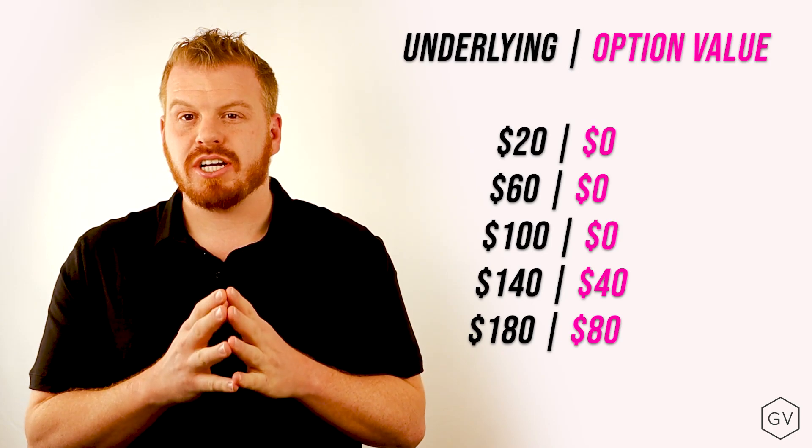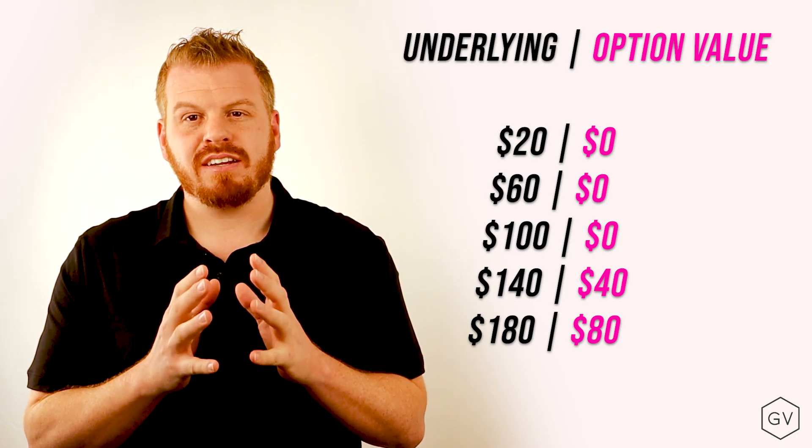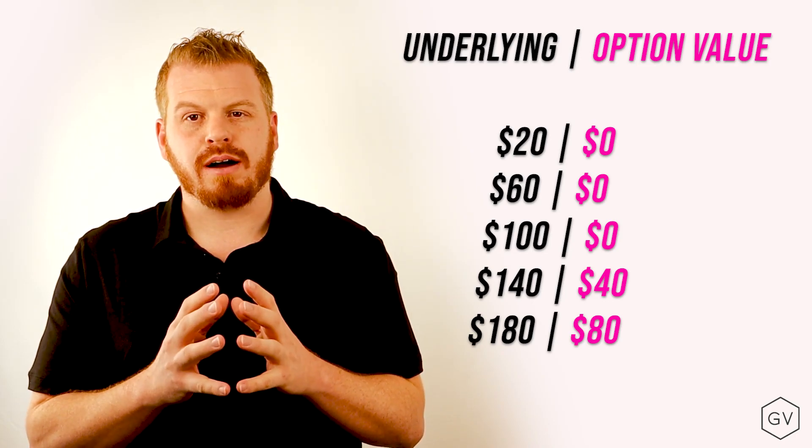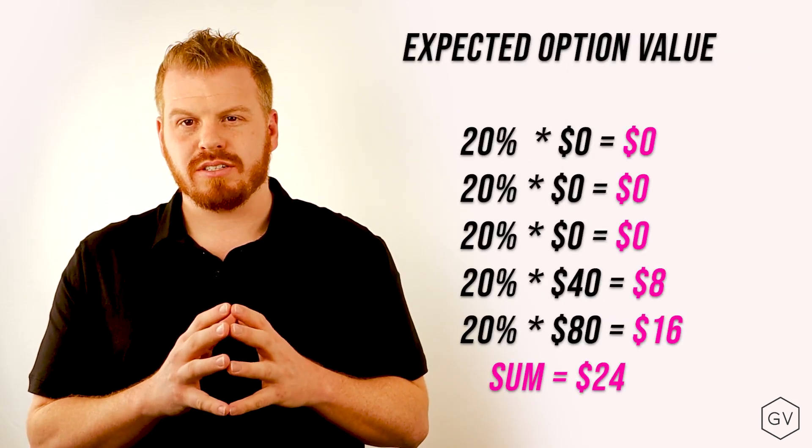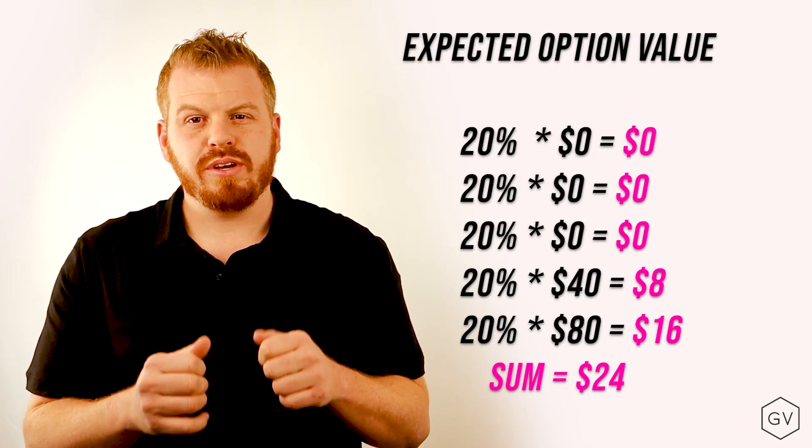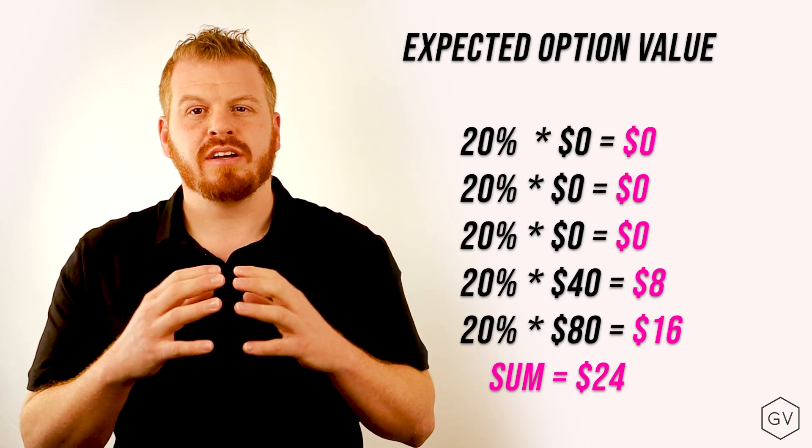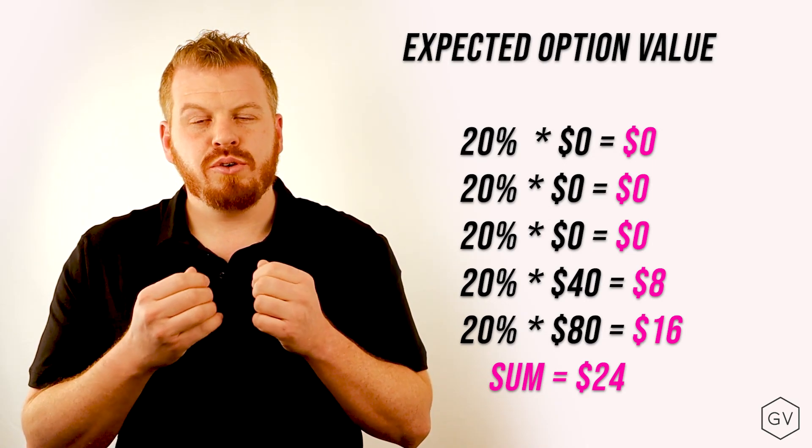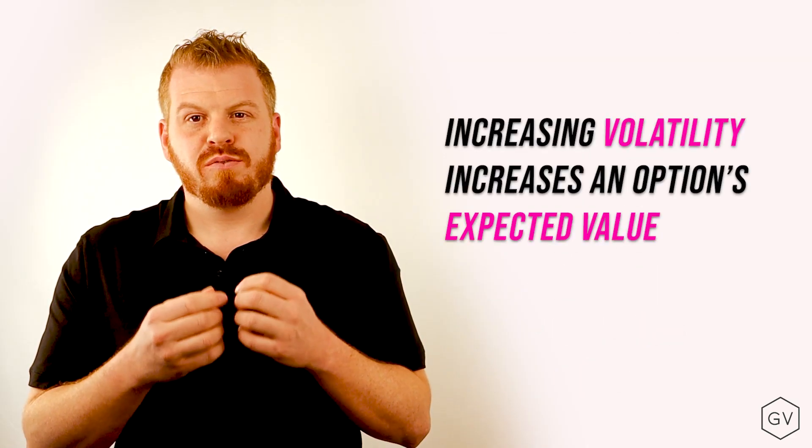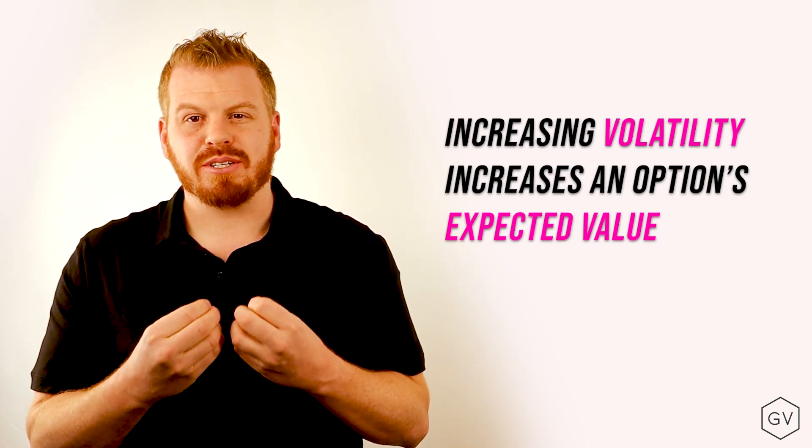Now probability adjusted, this expected value for this theoretical call option is now $24. You see, when you increase the range of the distribution of final values, you increase the value of one-way bets, which means you increase the value of options.